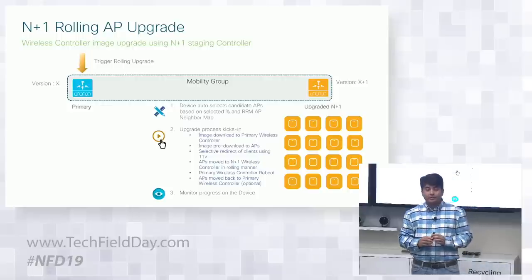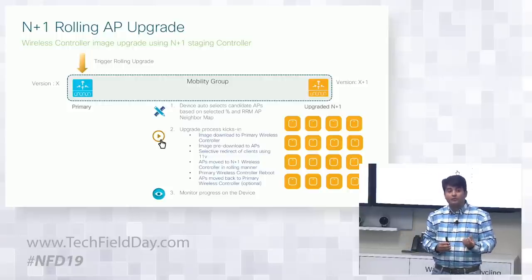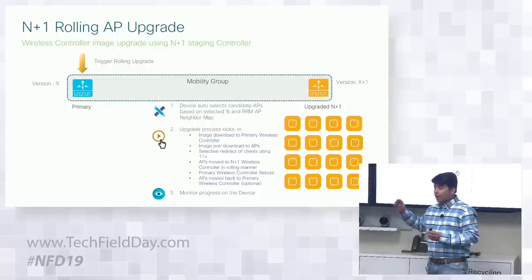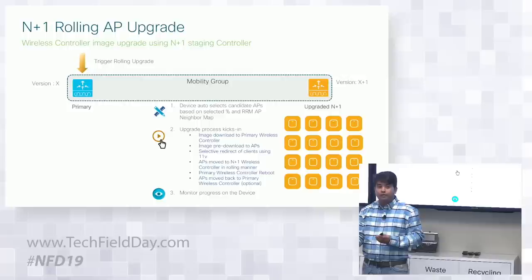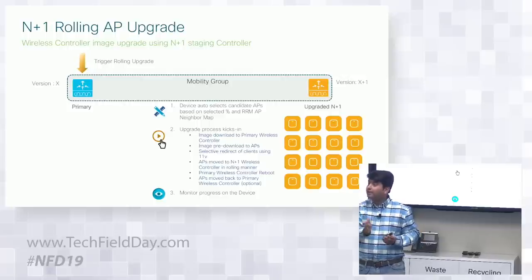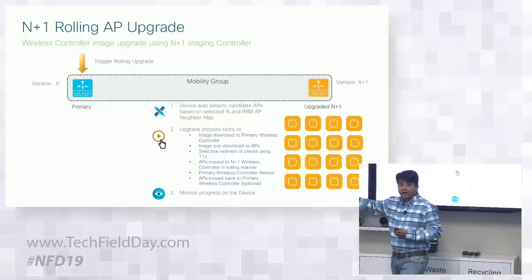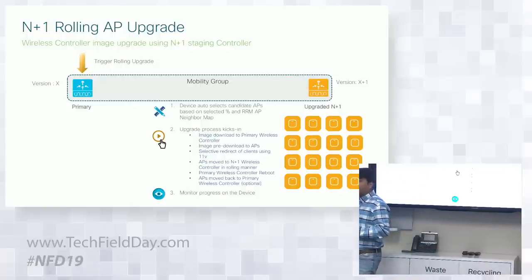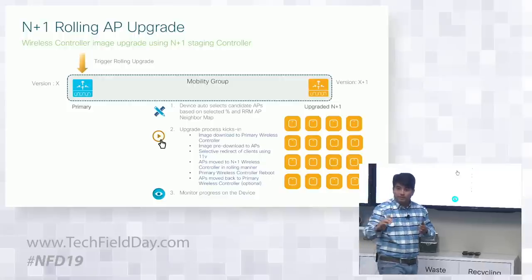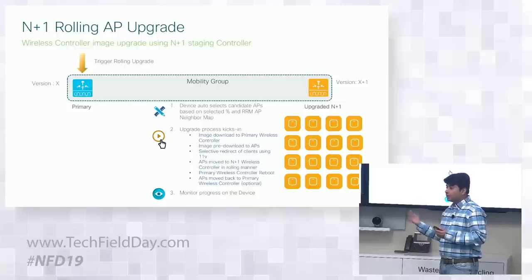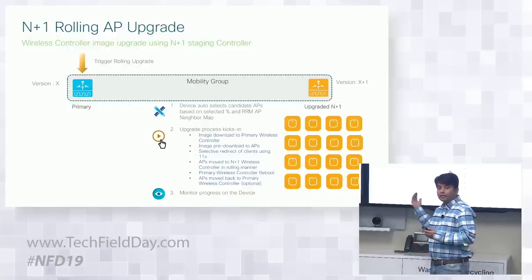The system starts with APs that have no clients first — picking APs with minimum clients, finding safe neighbors, and automatically steering clients to them. When an AP has no clients, it moves to the new controller. The first controller intelligently detects the AP has been upgraded, and only then starts the next AP. Mobility messages are exchanged when APs on the new controller are fully ready to take new clients. Then the remaining APs slowly move to the new controller to get upgraded.